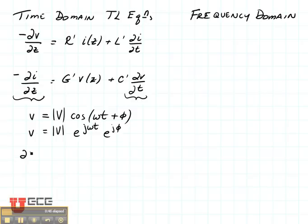Then if we take the derivative with respect to time, we get j omega e to the j omega t e to the j phi. That's the same thing as j omega v.